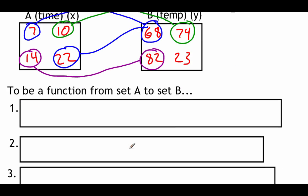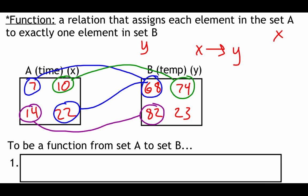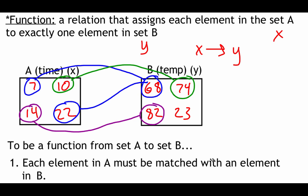I've got four characteristics of a function listed. The first two are what make a function an actual function; the last two are things that can happen but don't always. The first characteristic says each element in set A — our x values, or time — must be matched with an element in set B, our y values or temperature. Each x has to have a y.